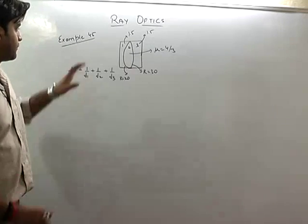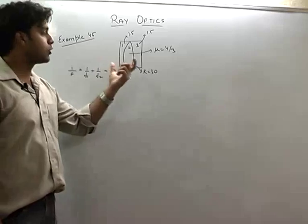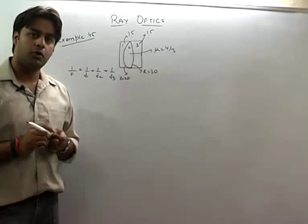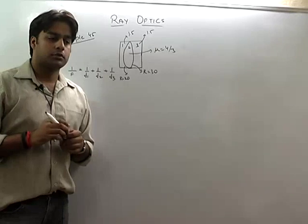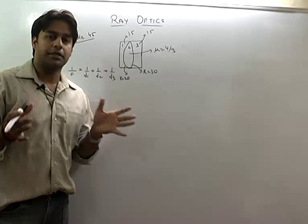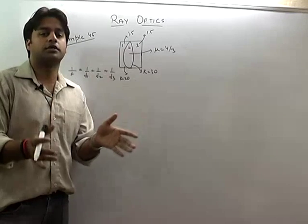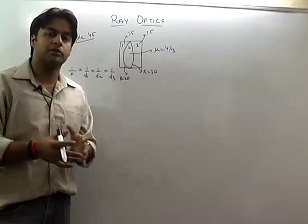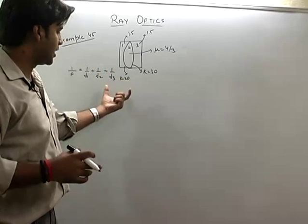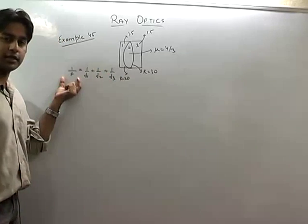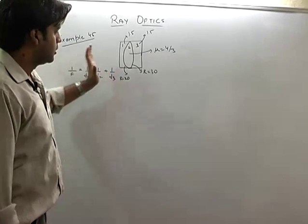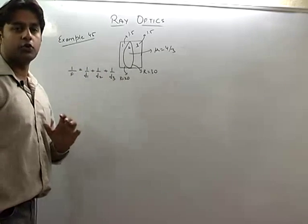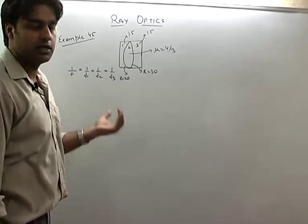Now let us see example number 45, which is related to the combination of lenses. When the combination of lenses is done, we do not know what the net result will be — whether it will become divergent, convergent, or plain. When the net focal length comes, it will show whether it is a divergent or convergent lens.